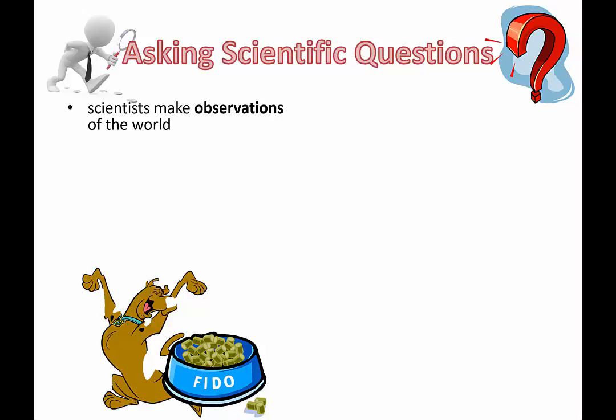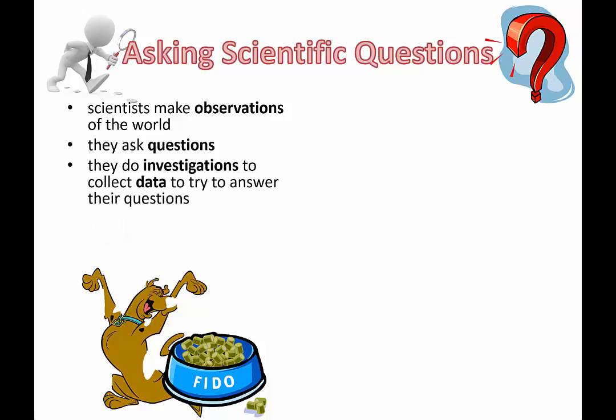Scientists are making observations about their world. They're walking around and just asking why are things the way they are. And they can be big questions or they can be very specific questions. Any question is a good question. And even if someone else has asked that question before, it's part of science to constantly check to see if the answers to the questions we were asking before are still valid.